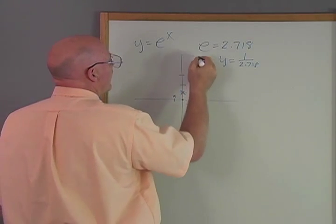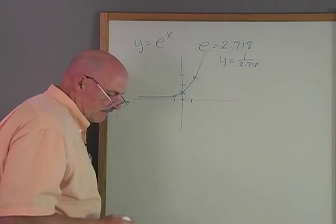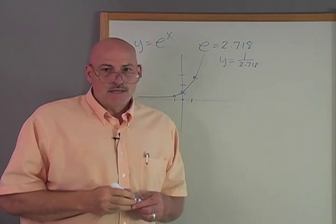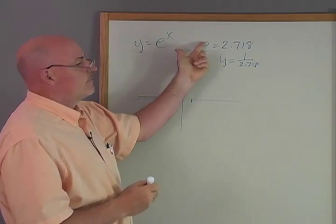So it turns out that our graph is going to be right like this and then going up like that. Okay? So that should be something that when you see Y equals E to the X, you could graph that.